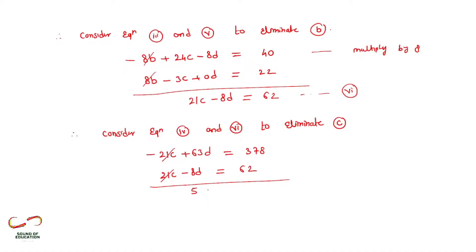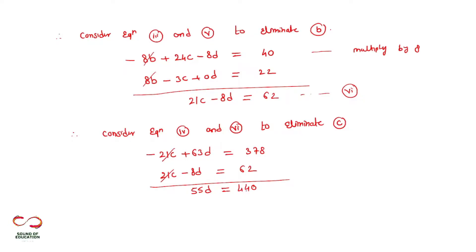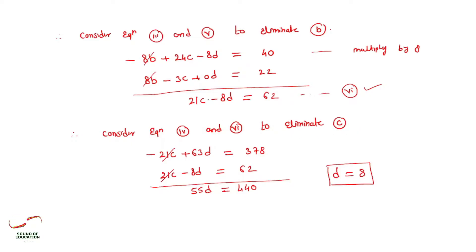After adding, we get: 63D minus 8D equals 378 plus 62, so 55D equals 440. We have now eliminated A, B, and C. We can directly get the value of D: D equals 440 divided by 55, which gives D equals 8. Now putting D equals 8 into equation six, we can calculate C.